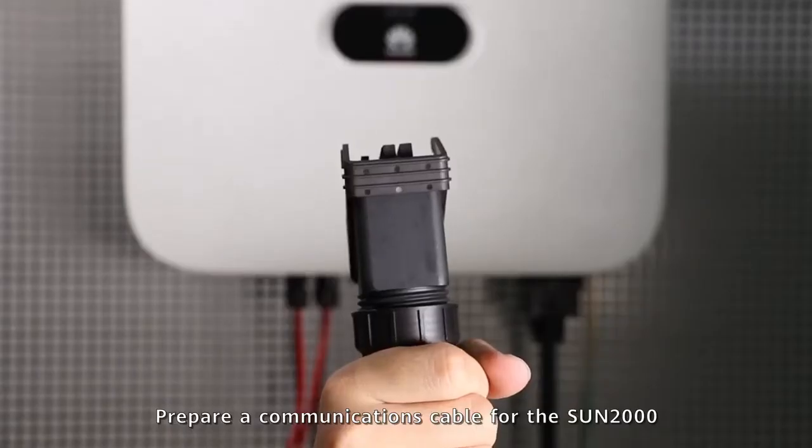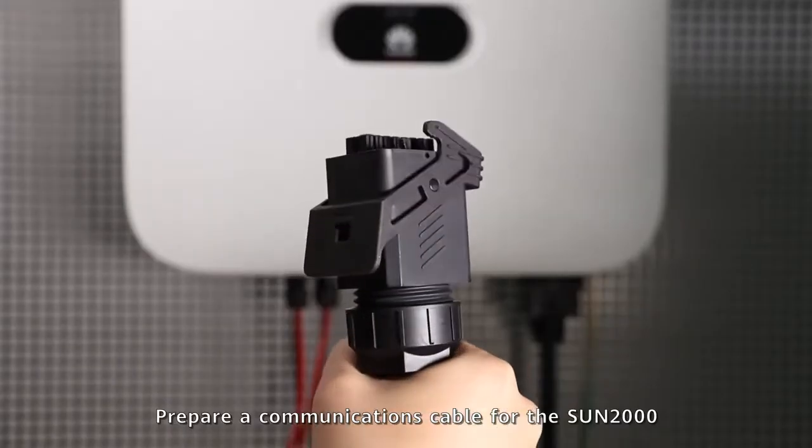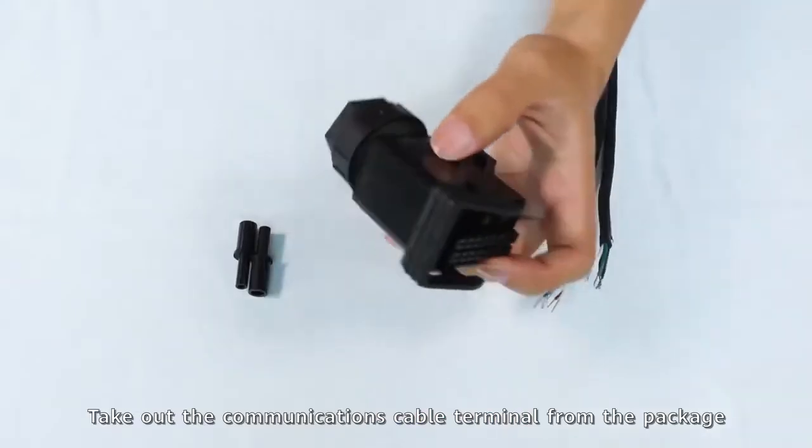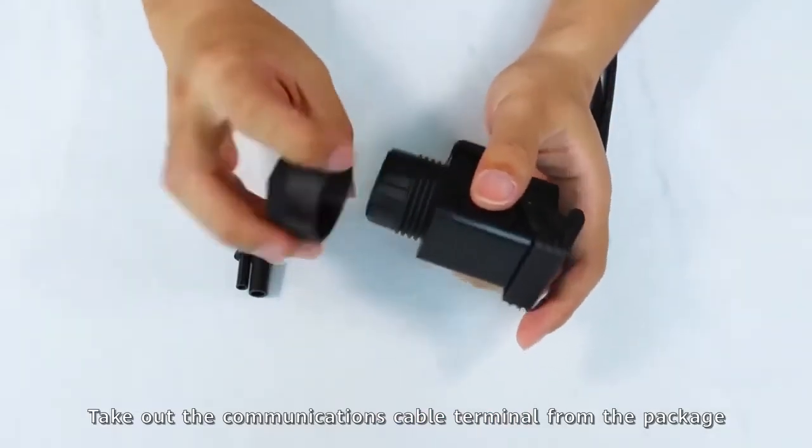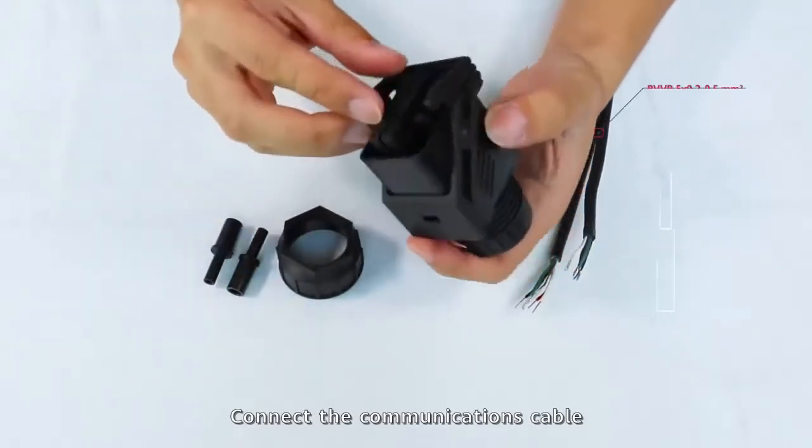Prepare a communications cable for the SUN2000. Take out the communications cable terminal from the package. Connect the communications cable.